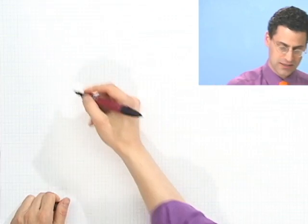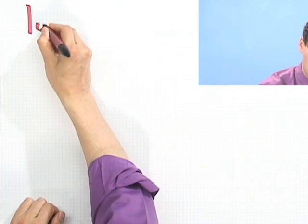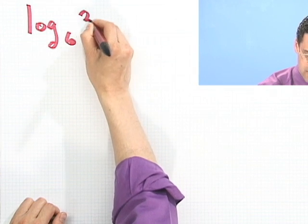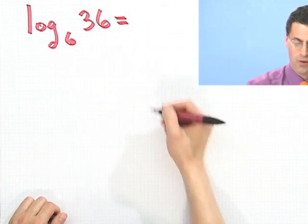Alright, let's now take a look at actually finding the values of logarithms. So again, just more practice with the logs. Let's take a look at the following: log base 6 of 36.